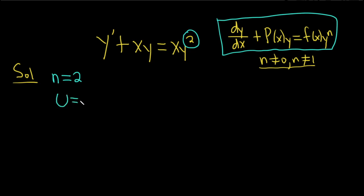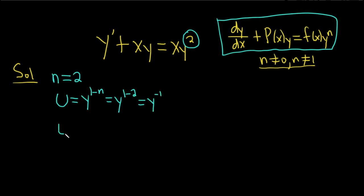u is equal to y to the 1 minus n — a very important formula. Now we plug in n, so this is y to the 1 minus 2, which is y to the negative 1. So we have that u is equal to y to the negative 1.